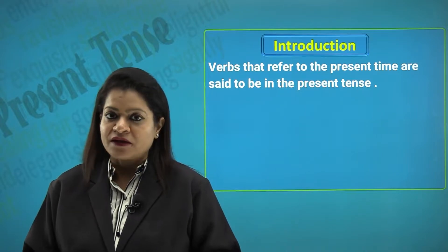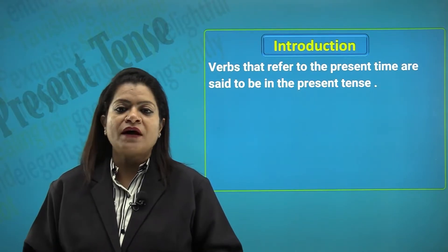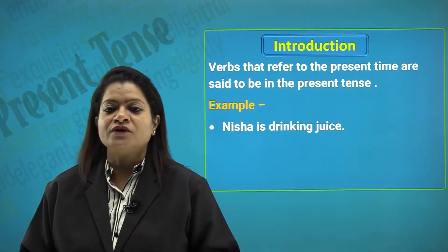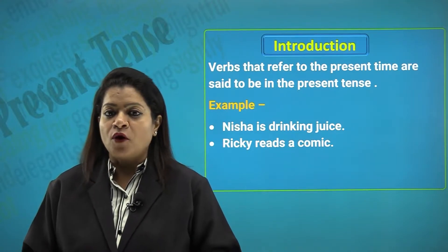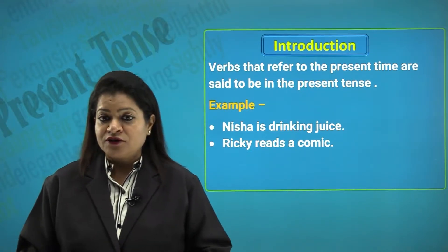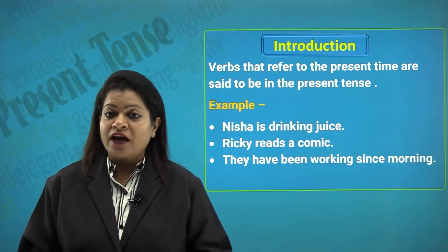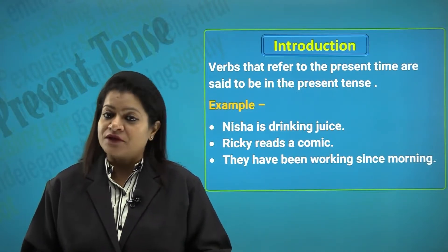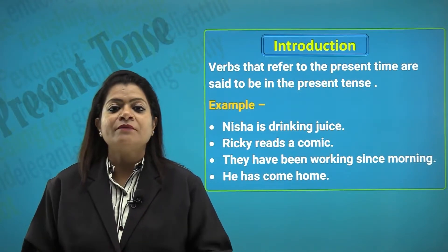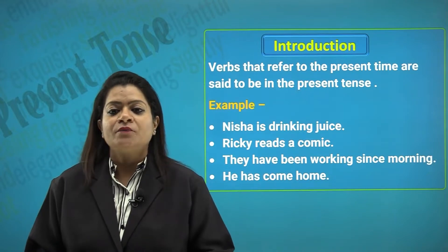Verbs that refer to the present time are said to be in the present tense. So whatever action is being done today, right now at the time of speaking, will all be put under the present tense. For example, 'Nisha is drinking juice,' 'Ricky reads a comic' — something he is in the habit of doing. 'They have been working since morning' — something being done by them since morning. 'He has come' — something that has just happened. You all are listening and watching this video — these are all examples of the present tense.